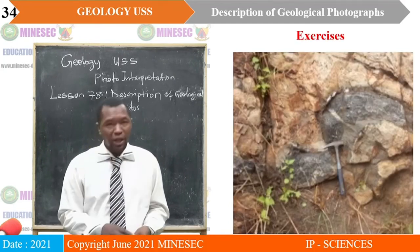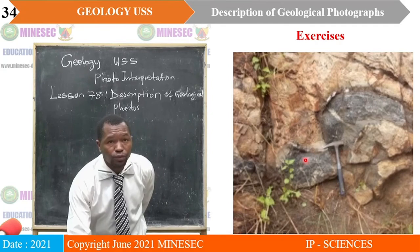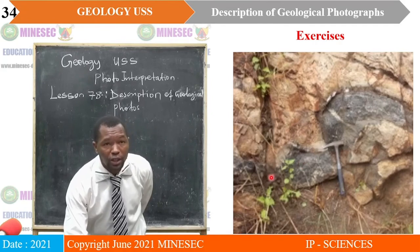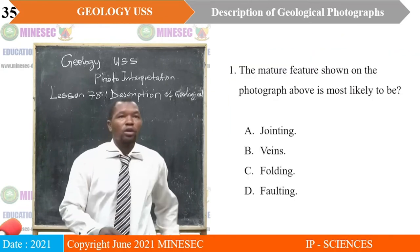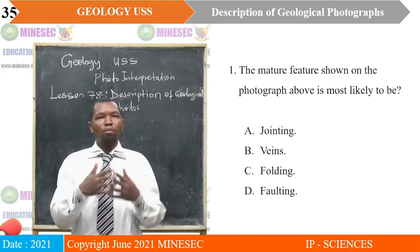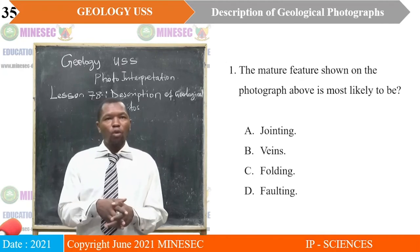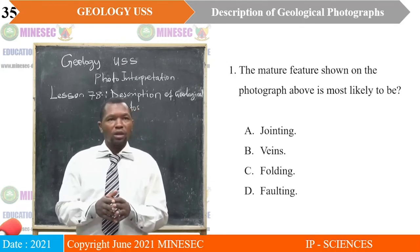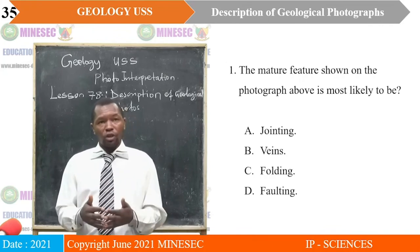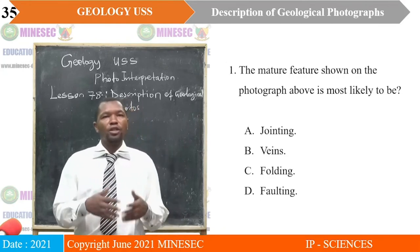For the exercise, the photo shows a dark bed bending and twisting from the position of the geologic hammer. Question one: the major feature shown on the photograph above is most likely to be: A. Bending and twisting of beds, B. Breaking and displacement, C. Cross-cutting of structures, D. Conformable beds.